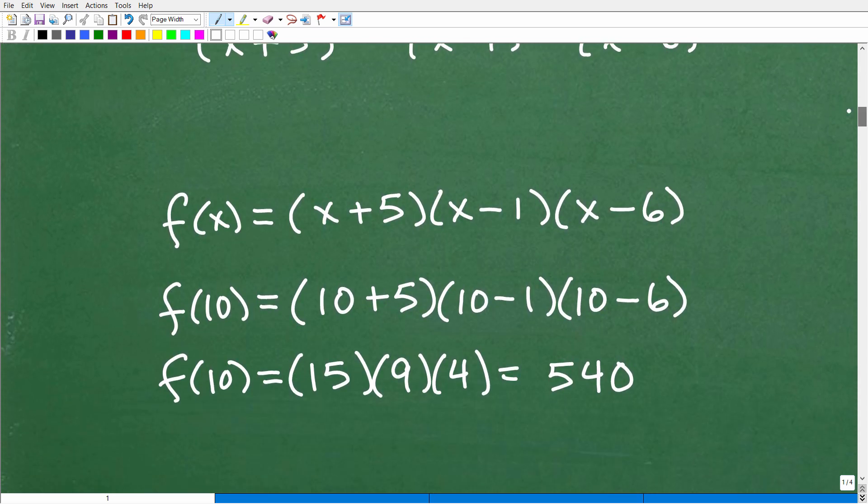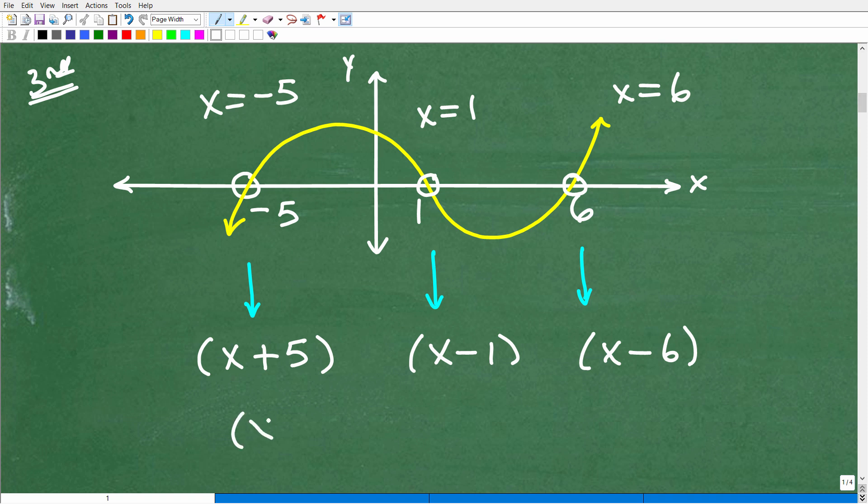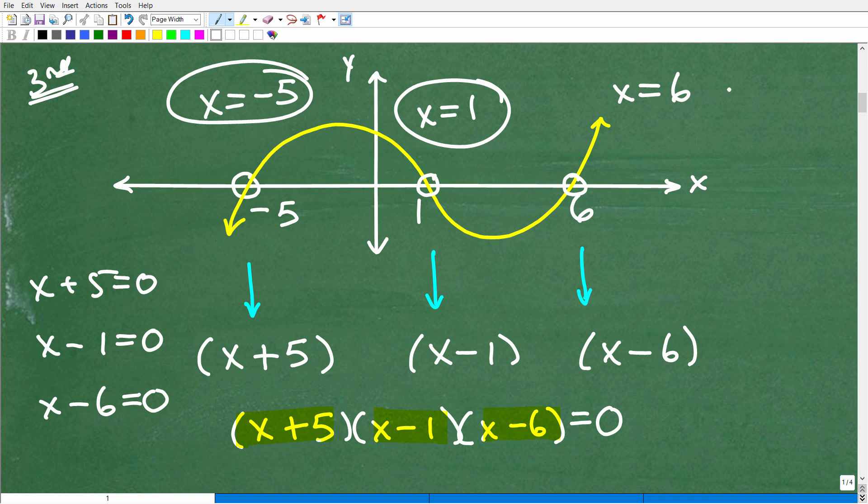Let's say I said solve this equation. I have a polynomial equation, x plus 5 times x minus 1 times x minus 6 is equal to 0. If I said solve this equation, what would you do? Well, you would set each one of these factors equal to 0. You would go, x plus 5, I'm going to set that equal to 0. x minus 1, I'm going to set that equal to 0. And x minus 6, I'm going to set that equal to 0 and solve. And when you solve these three little equations, you're going to get x is equal to negative 5, x is equal to 1, and x is equal to 6. So this is how we kind of reverse engineer and build this polynomial function.